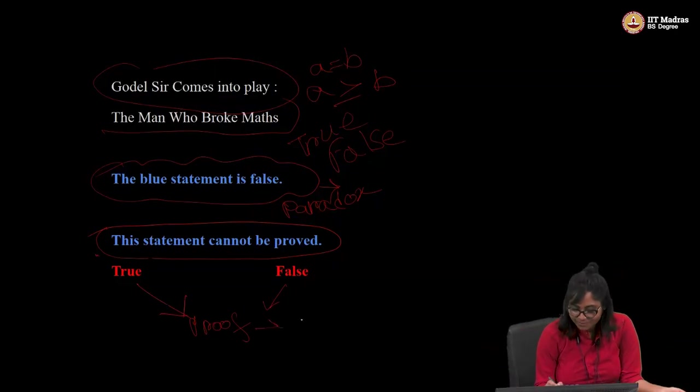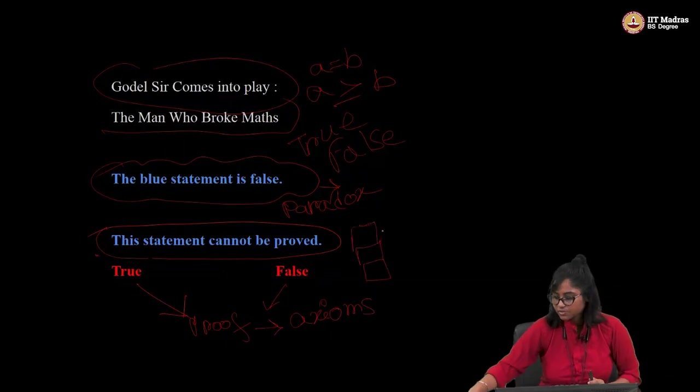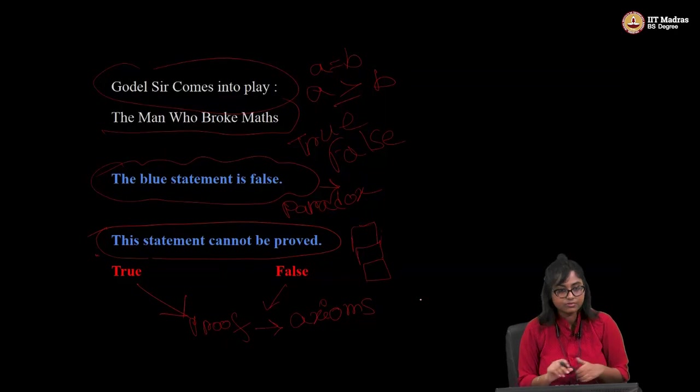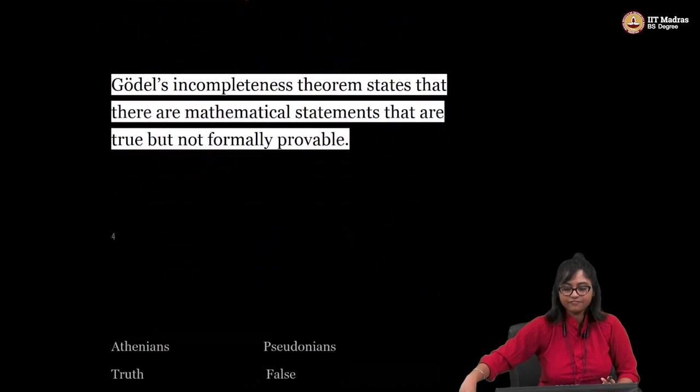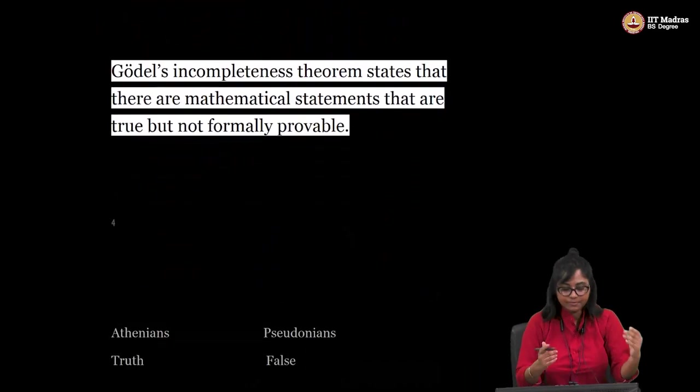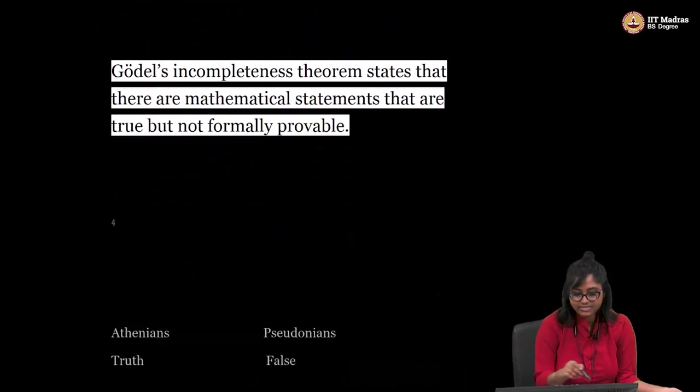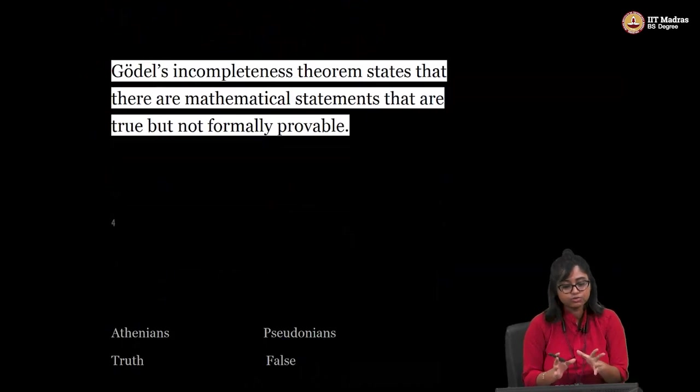So there is this building blocks in mathematics, which we called axioms. Axioms are the building blocks of mathematics. Like 2 plus 2 will be 4. 3 plus 2 will be 5. These are the building blocks. So this whole building blocks falls apart because now we know that there are some middle grounds. All right, let's move on. Yeah, this is the formal statement of Godel's incompleteness theorem, which states that there are mathematical statements that are true, but not formally provable.